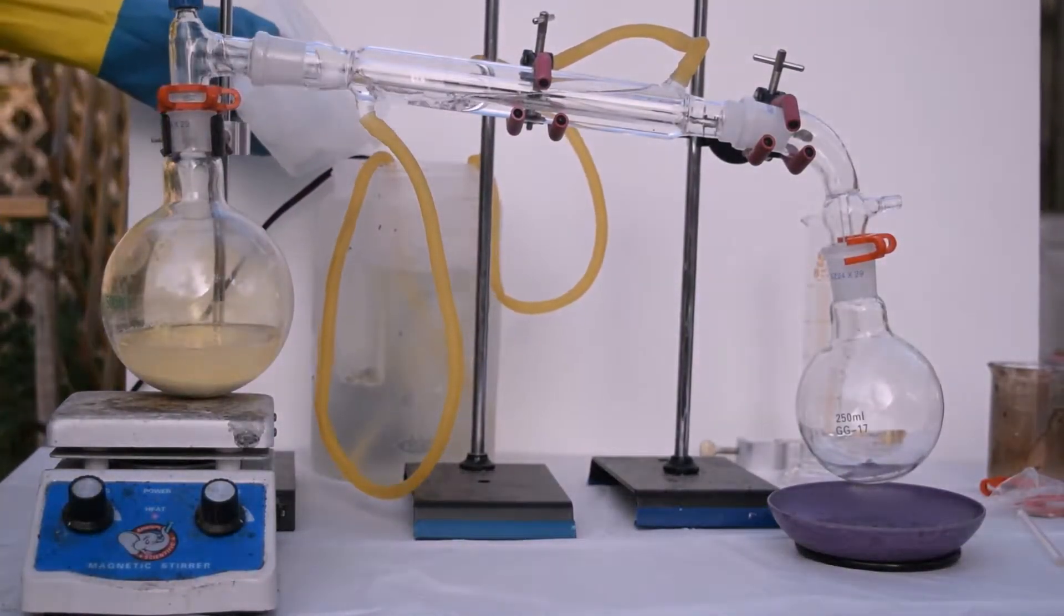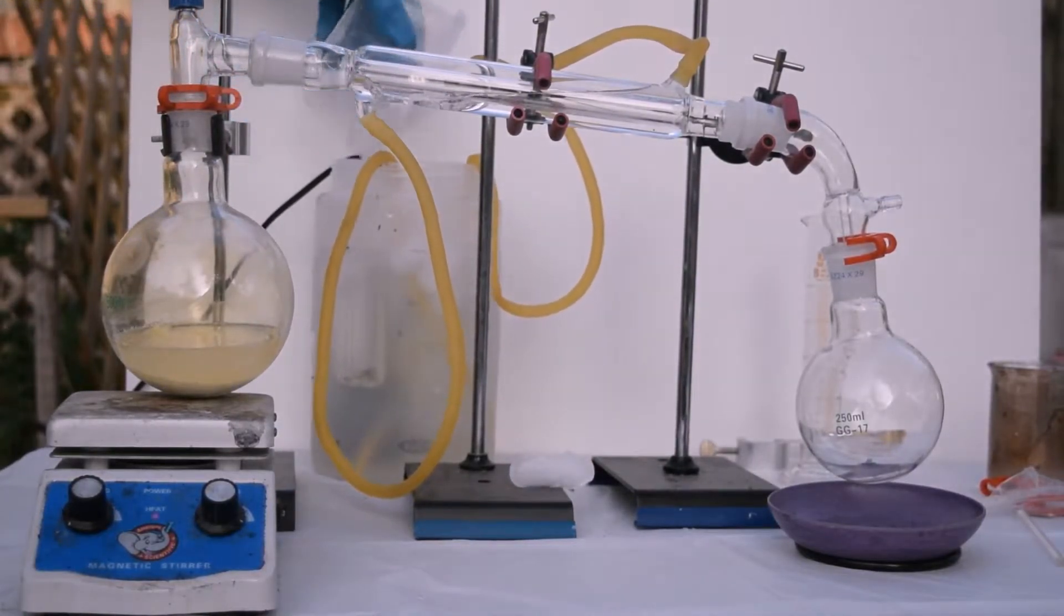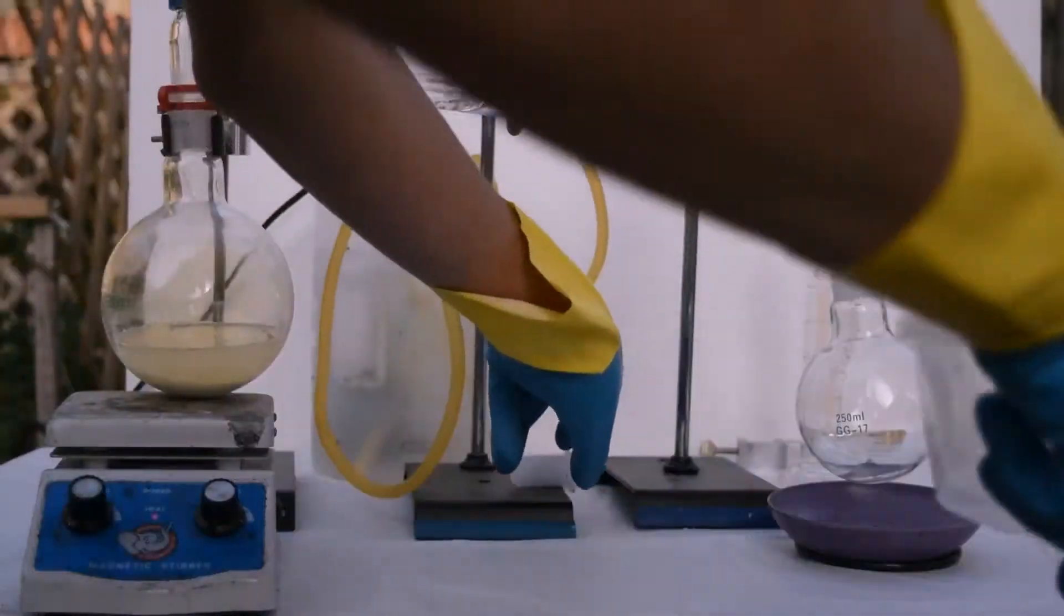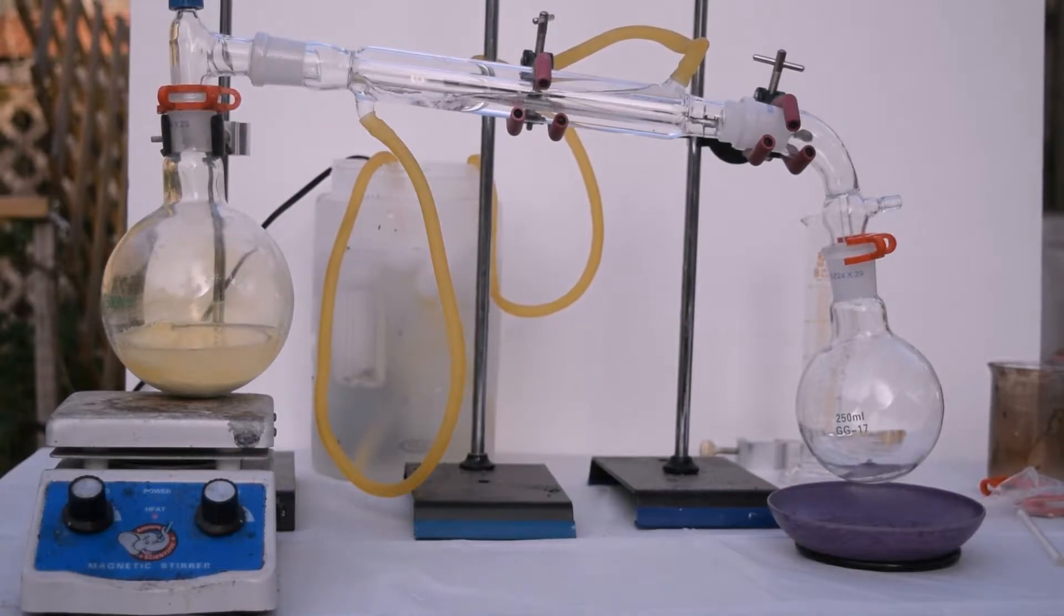Hey guys, this is Kermit37 and today we'll make nitric acid. You will need 65 milliliters of sulfuric acid and 80 grams of potassium nitrate. You also need a distillation setup.